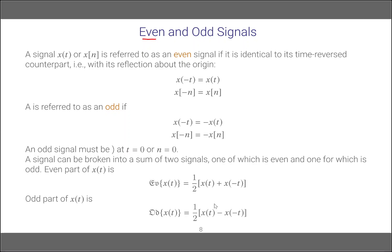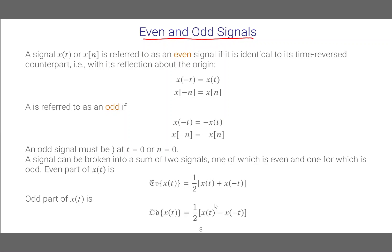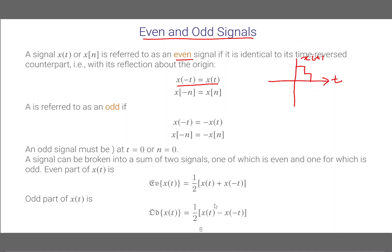Now let's look at even and odd signals. For a continuous time signal x(t) or a discrete time signal x[n], such a signal is referred to as an even signal if it is identical to its time-reversed counterpart — that is, with its reflection about the origin. Mathematically, x(−t) equals x(t). We can draw a simple continuous time signal which is even: if you reflect the signal along the y-axis you get the same thing. Such a signal is symmetric across the y-axis.